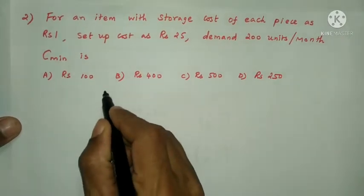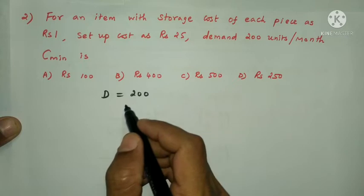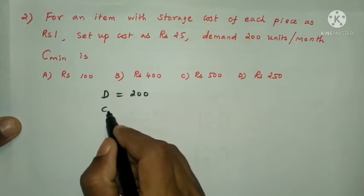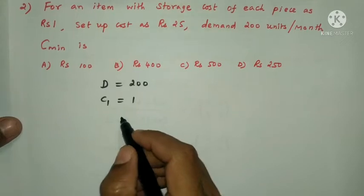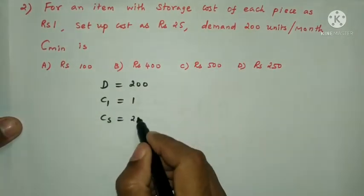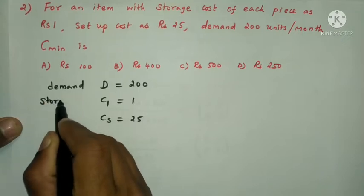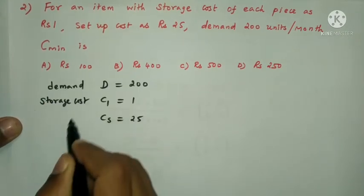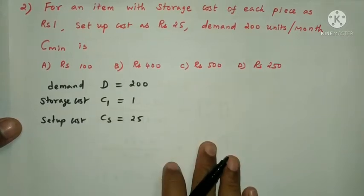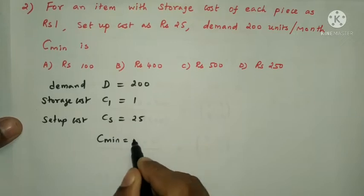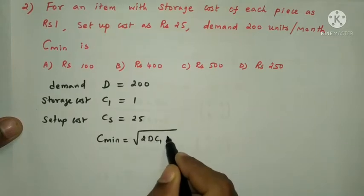For the solution: demand D equals 200 units per month, storage cost C1 equals 1, setup cost CS equals 25. The formula for minimum cost C_minimum equals the square root of 2 into D into C1 into CS.